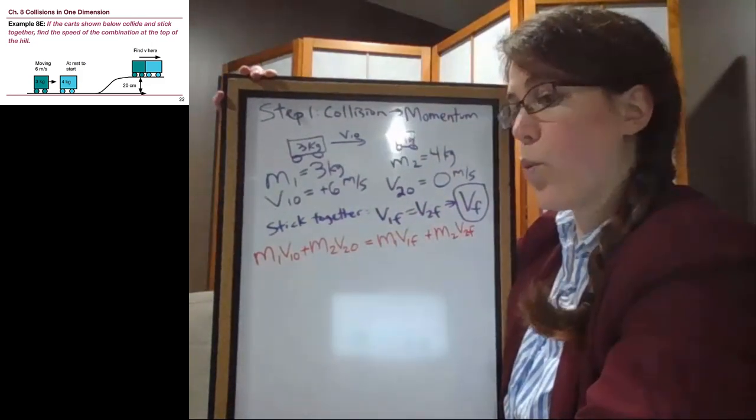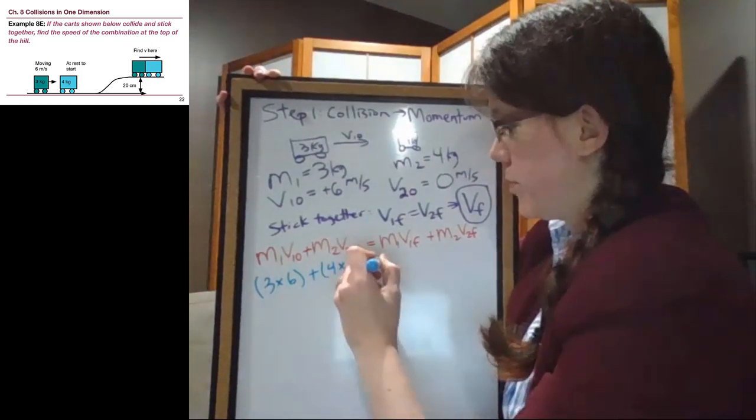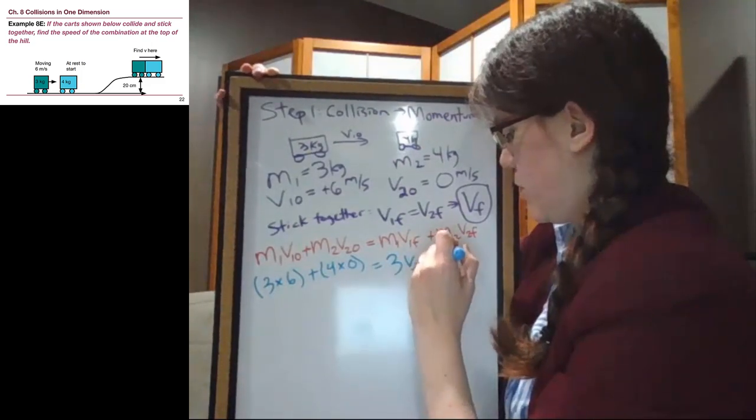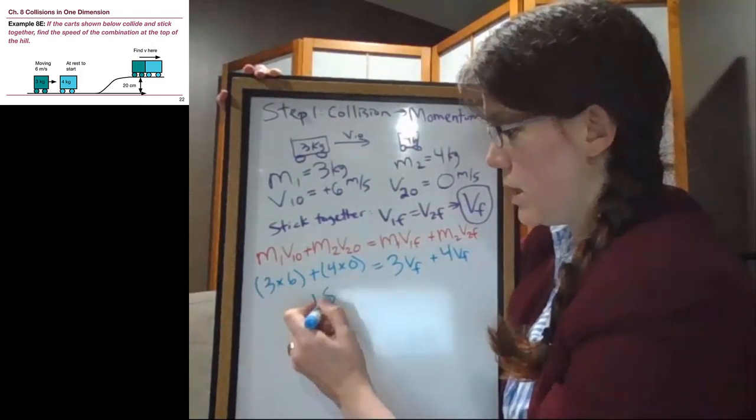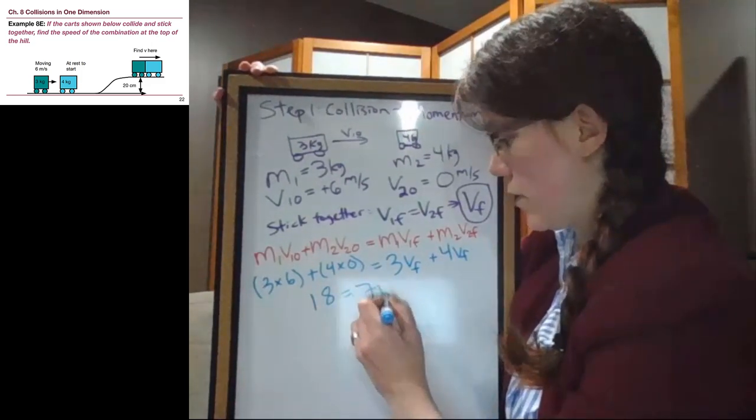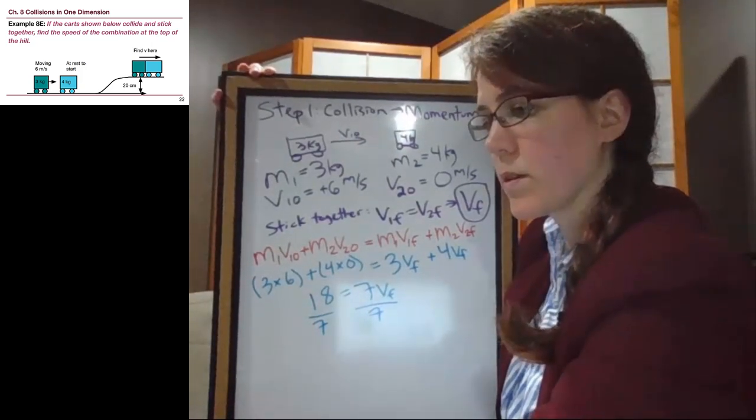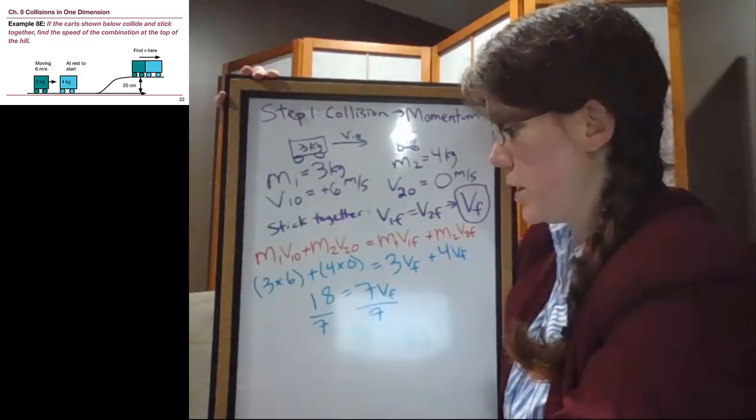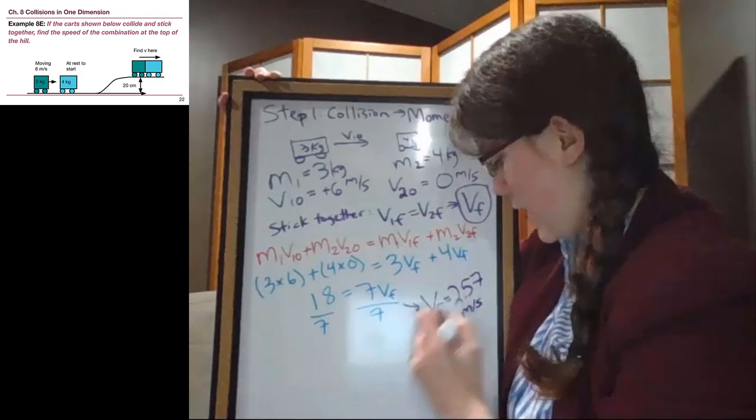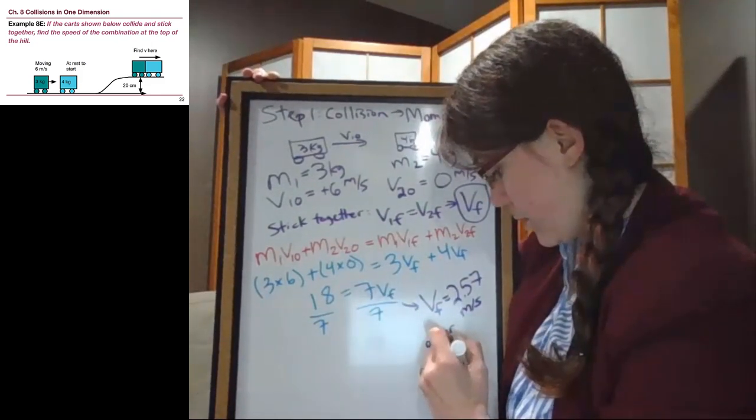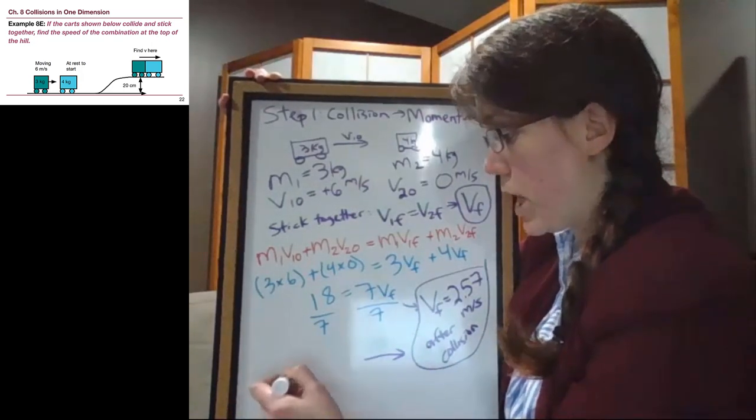All right, so when we plug in the numbers, we have 3 times 6 plus 4 times 0 equals 3 V final plus 4 V final. So on the left side here, 3 times 6 is 18. 4 times 0 is 0. So we have 18 equals 3 V final plus 4 V final, a total of 7 V final. So we can divide both sides by 7 and we'll get 2.57. So this V final that we're looking for in step 1 is 2.57 meters per second after the collision,